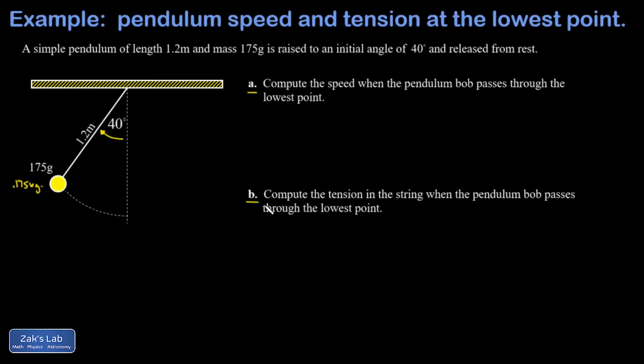So to approach this energy conservation question we have to figure out what's the vertical distance that the bob fell through as it goes from its initial to final position. And this is a classic trig issue that happens for pendulums. The length that I just labeled is going to be 1.2 times the cosine of 40 degrees.